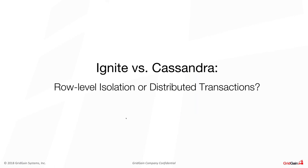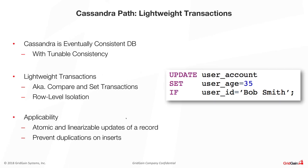Now let's look at the transactional part of HTAP applications. In the HTAP world, we need to support some transactional workloads. We'll compare row-level isolation of Cassandra and true distributed transactions of Ignite. If you Google for Cassandra transactions, you'll see the term 'lightweight transactions' come up. Technically, Cassandra is an eventually consistent database — there's nothing wrong with that, it was designed for those scenarios. For transactions, Cassandra offers row-level isolation. But in my personal opinion, I would not consider row-level isolation as a true transaction — it's just the ability to update a single row atomically without intervention.